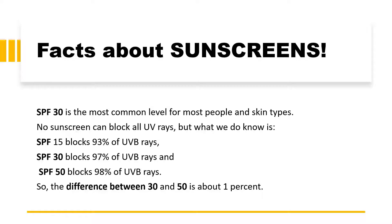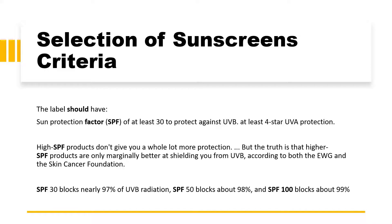When choosing a sunscreen, two things are very important: the SPF factor and the UVA star rating. No sunscreen can block all UV rays, but SPF 15 blocks 93% of UVB rays, SPF 30 blocks 97%, and SPF 50 blocks 98%. The difference between SPF 30 and SPF 50 is hardly 1%. It is recommended to use SPF 30 along with a high star rating — specifically, at least SPF 30 for UVB protection and at least 4-star UVA protection.